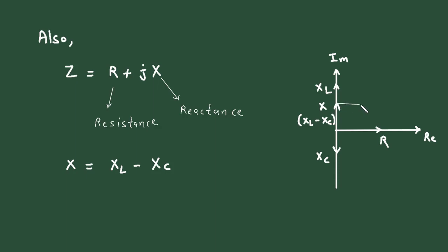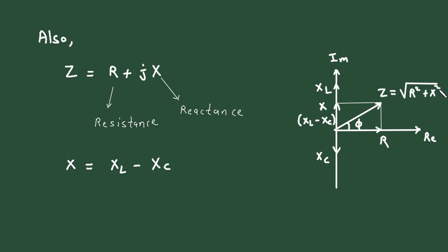If we take the resultant of R and X, we draw a parallel line to get the resultant vector, which is called Z — the impedance. The angle is called angle Phi. So we can calculate the magnitude of Z as equal to the square root of R squared plus X squared. We can also calculate the angle Phi as tan inverse of X by R.